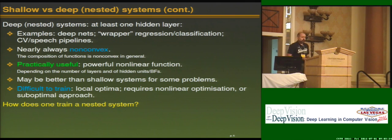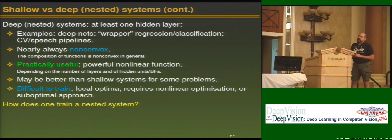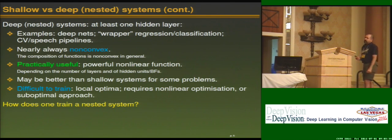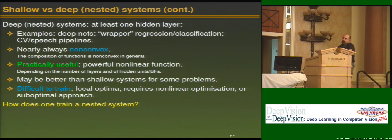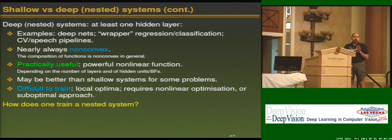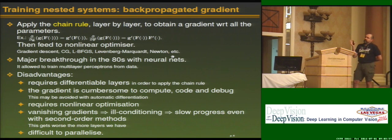The reason why these systems are difficult to train is that composition of functions nearly always generates non-convexity. Non-convex problems are not only non-linear but are difficult to optimize in general — they have local optima. I'm going to briefly describe the typical ways that non-convex nested, deep systems are trained today. There are basically two ways.